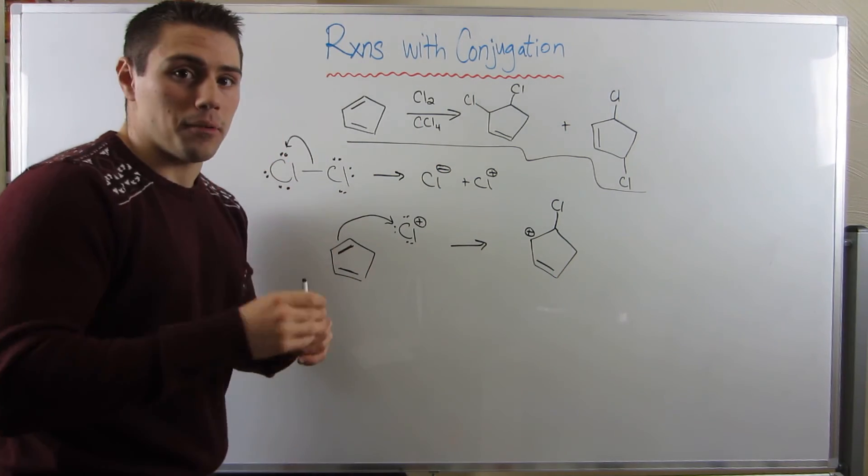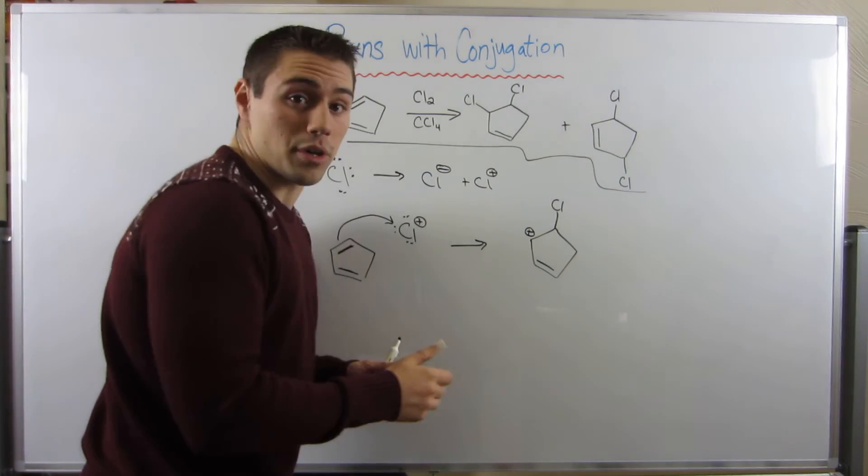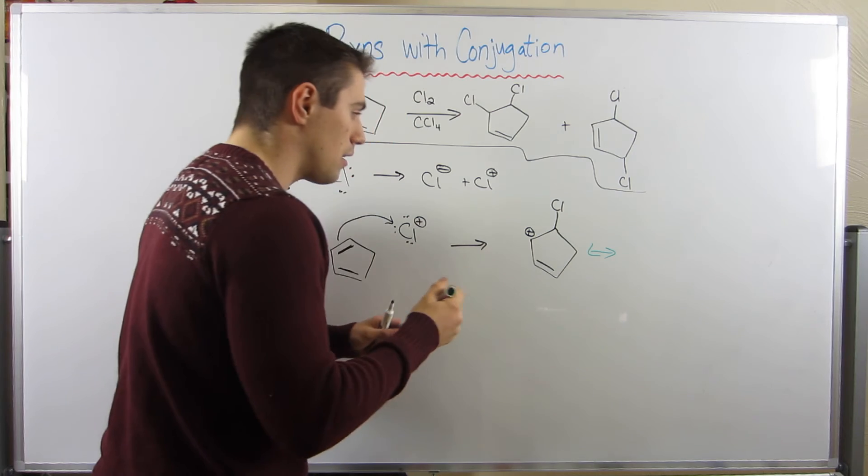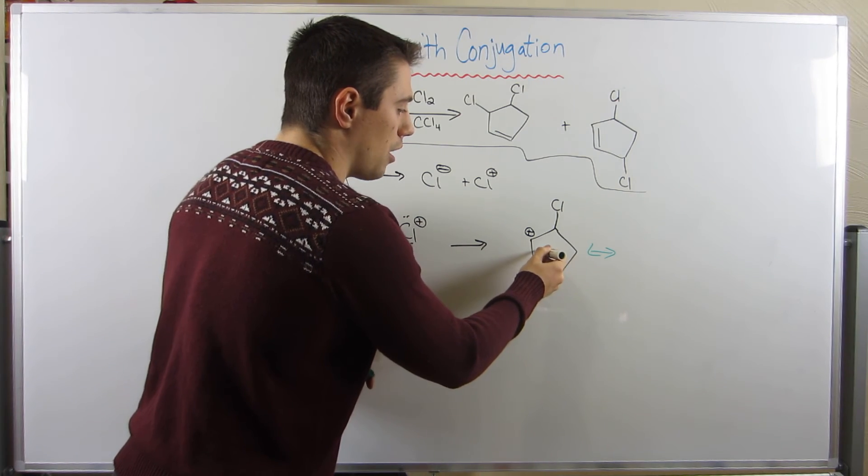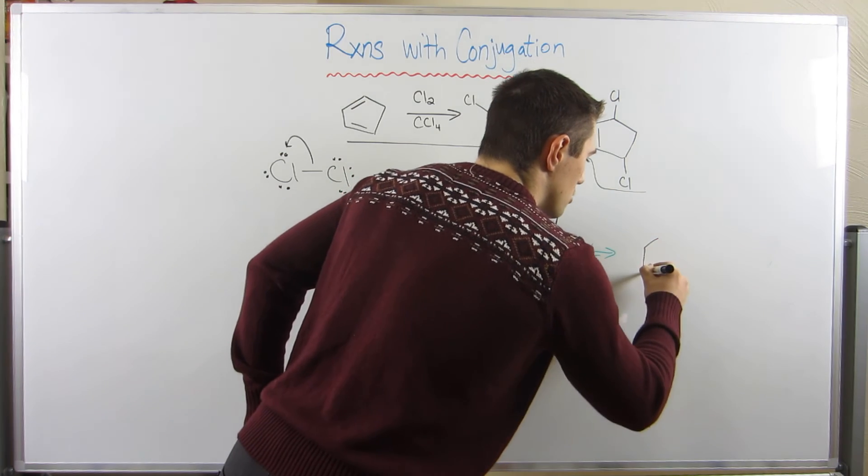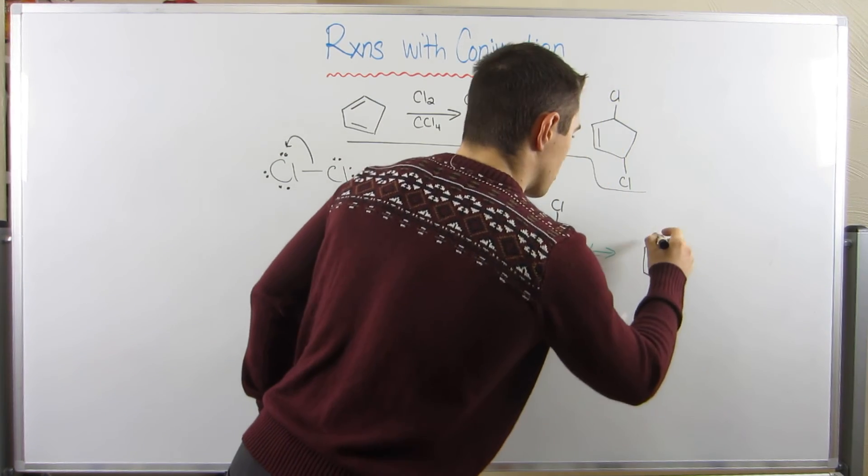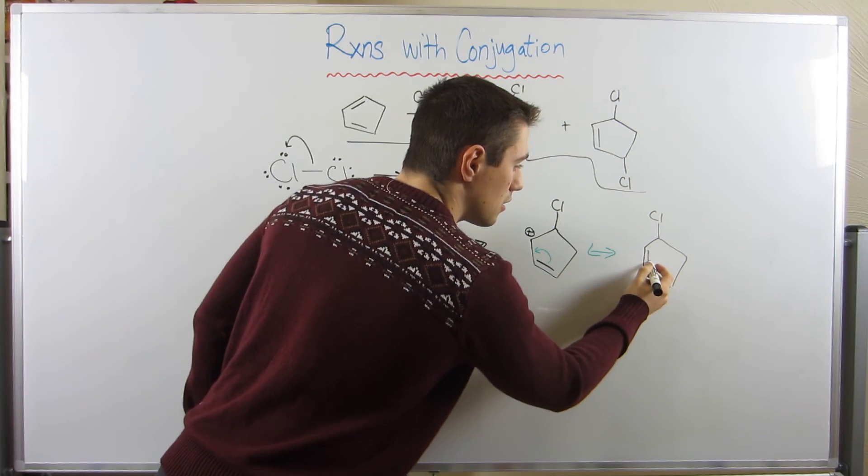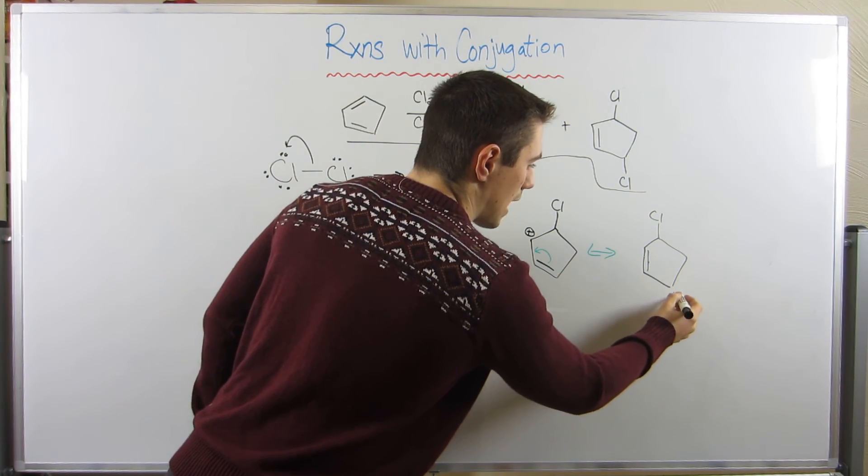All right, now this is the part. Bang, bang, bang, bang. We're going to draw some resonance. So, I'm going to draw a double-headed arrow. I'm going to move the double bond over here, and let's draw the result of that electron flow.